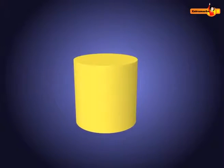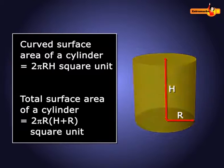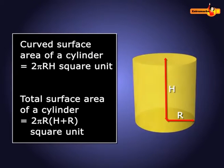Consider another solid, a right circular cylinder with radius r and height h. Curved surface area of a cylinder is equal to 2πrh square unit. Total surface area of a cylinder is equal to 2πr(h+r) square unit.